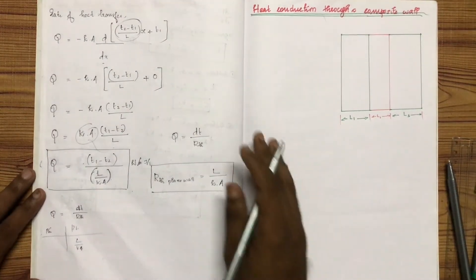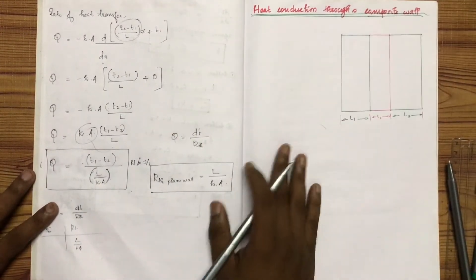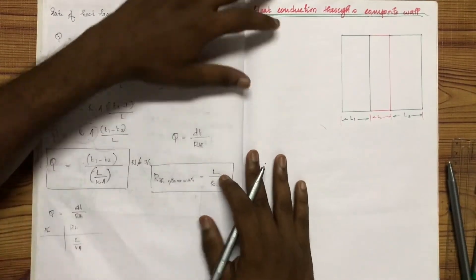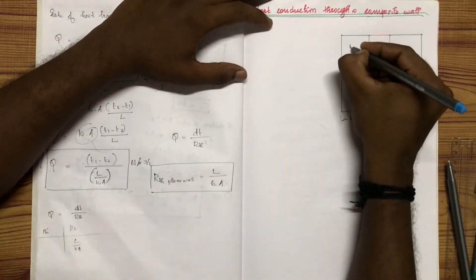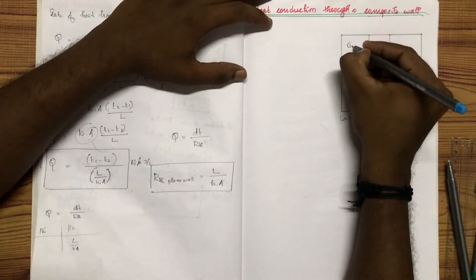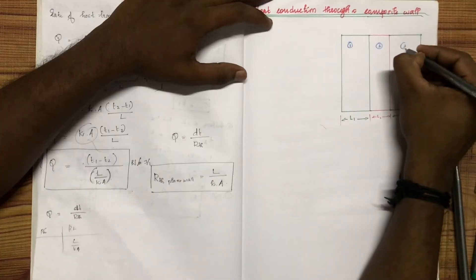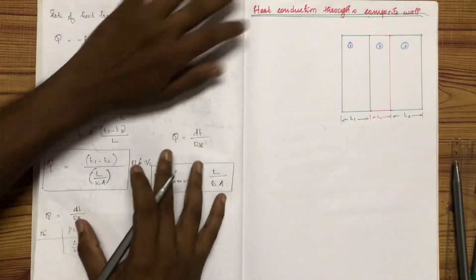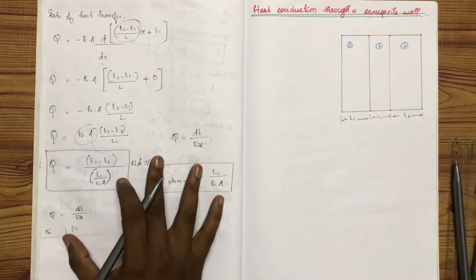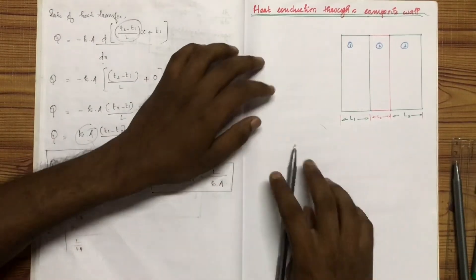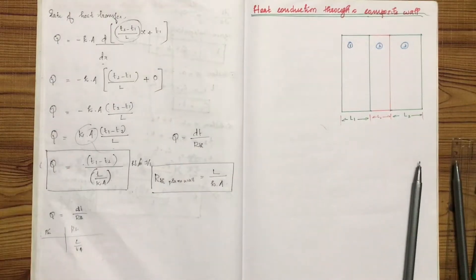This is a composition of heat conduction through a composite wall. Here are three different layers: one, two, three. There are three different dissimilar materials. There are three different wall combinations. Let's take a look at the example.